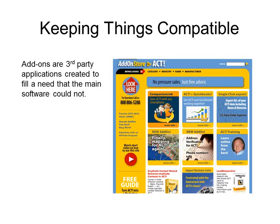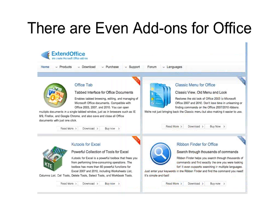Not only can you find add-ons for CRMs, but for things you're using right now, like Office, there are a whole bunch of add-ons. One thing to remember about technology is companies will stop supporting previous versions. So if you've been forced to upgrade from Office 2003 to Office 2010 — you went from drop-downs to the ribbon — you can now make your Office 2010 look just like 2003 by adding what's called the classic menu. Even Microsoft's tools have add-ons.